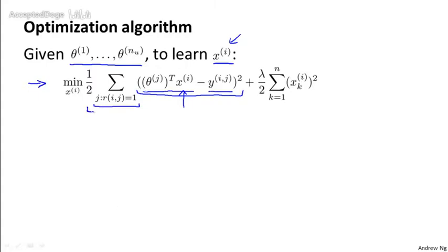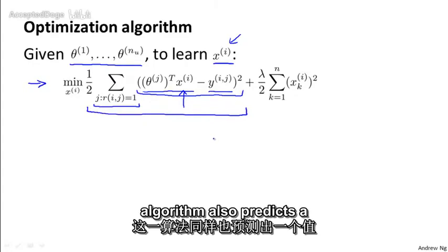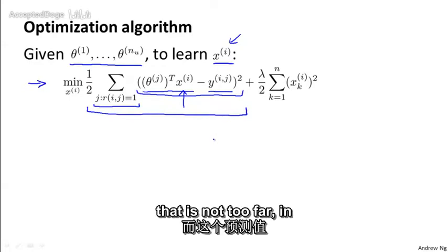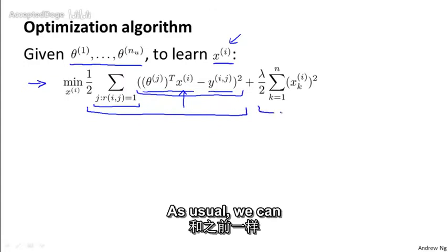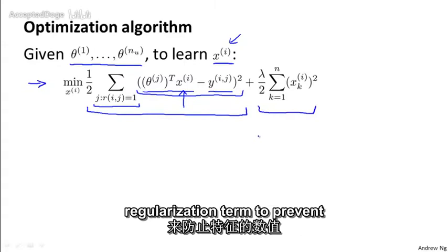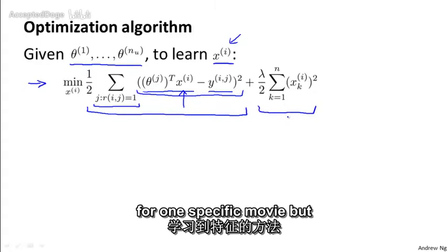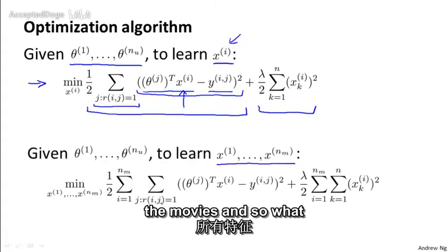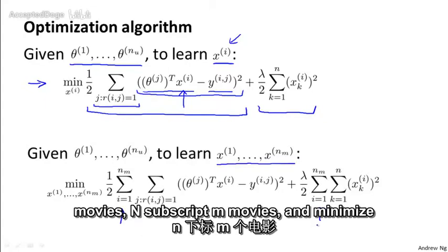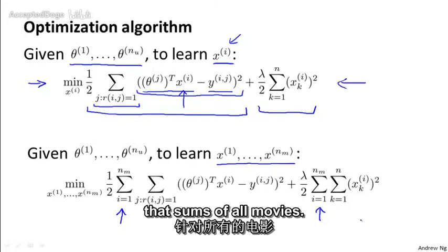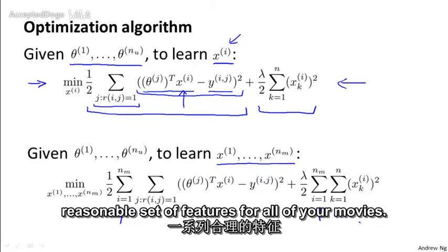So just summarize, what this term does is it tries to choose features x i so that for all the users j that have rated that movie, our algorithm also predicts a value for how that user would have rated that movie that is not too far in the squared error sense from the actual value that the user had rated that movie. So that's the squared error term and as usual we can also add this sort of regularization term to prevent the features from becoming too big. So this is how we would learn the features for one specific movie. But what we want to do is learn all the features for all the movies. And so what I'm going to do is add this extra summation here. So I'm going to sum over all nm movies, n subscript n movies and minimize this objective on top that sums over all movies. And if you do that, you end up with the following optimization problem. And if you minimize this, you have hopefully a reasonable set of features for all of your movies.